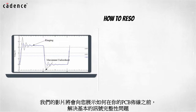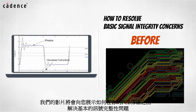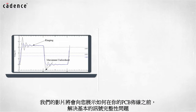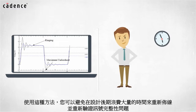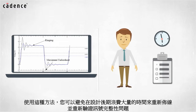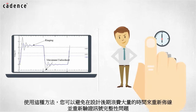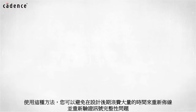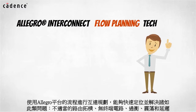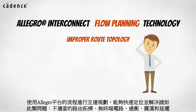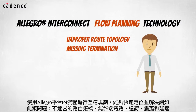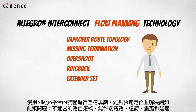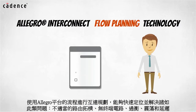Our video today will show you how to resolve basic signal integrity concerns before your PCB is even routed. Using this methodology you can avoid wasting hours of rerouting a PCB late in the design cycle and having to re-verify signal integrity. Using the Allegro Interconnect flow planning technology, issues such as improper route topology, missing termination, overshoot, ringback, and extended settling delays can be quickly identified and resolved.